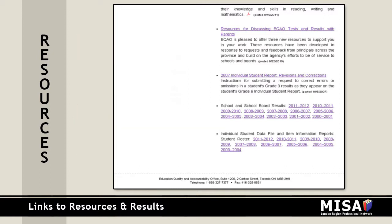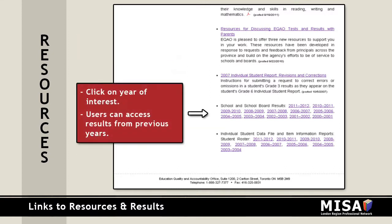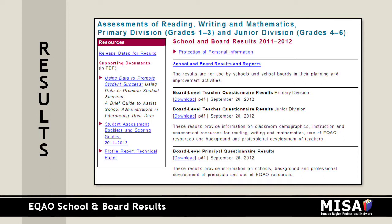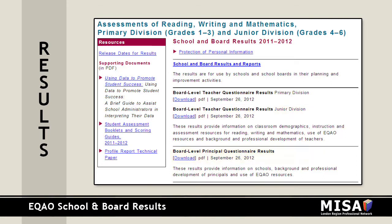To access your school results, select the appropriate year. On this page, you will find the Board-Level Teacher Questionnaire results for both the Primary and Junior Divisions, as well as the Board-Level Principal Questionnaire results. For more information on how to use these reports, please see the provided resource guide.